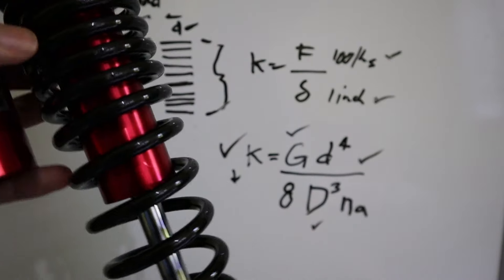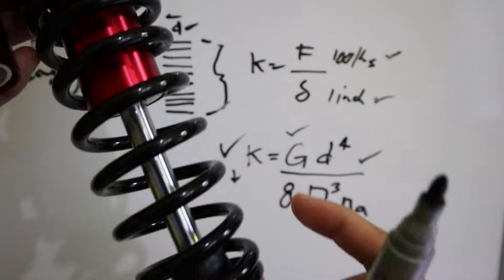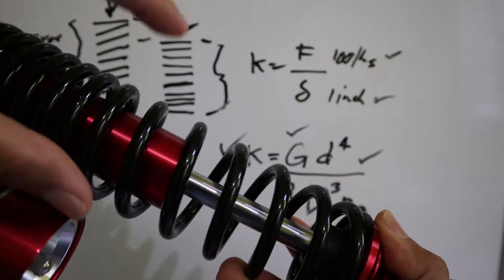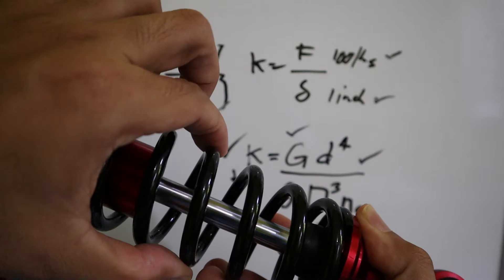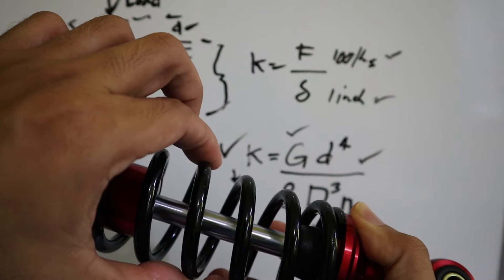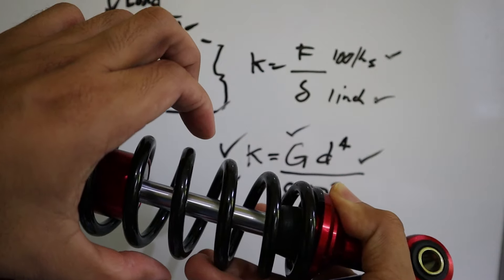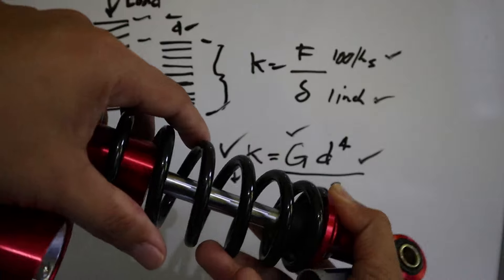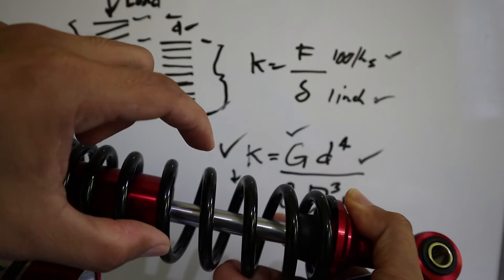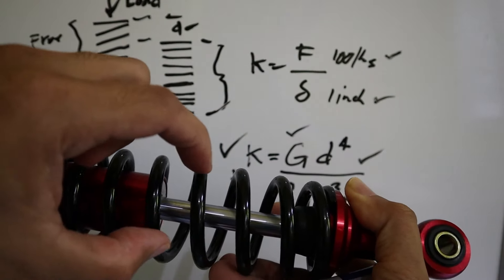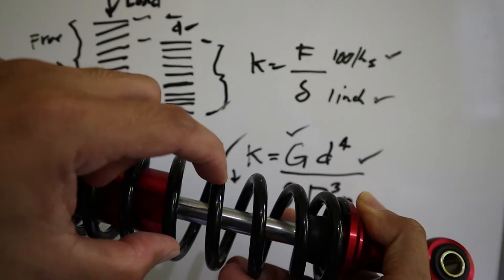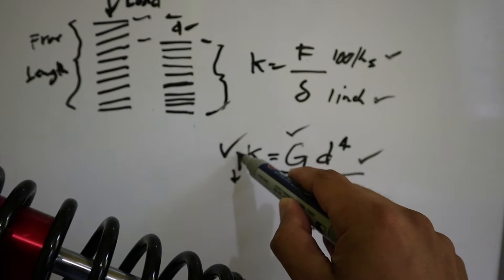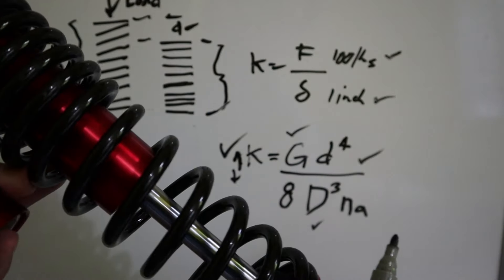The spring diameter — and this refers not to the wire thickness but to the overall coil diameter, which is bigger. According to the formula, the larger the spring diameter, the softer the spring. And the smaller the diameter, the higher the spring rate, meaning stiffer — assuming the same material and wire thickness.